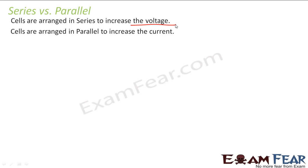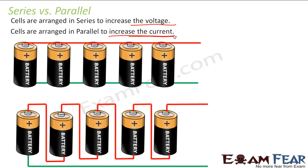Whereas you can arrange cells in parallel to increase the current. As you saw in the previous slide, even though you arrange n number of cells in parallel combination, your voltage will still remain the same — since the voltage across each cell remains the same, there is no increase in voltage. But there is an increase in the current which flows through the circuit when the cells are arranged in parallel. So depending upon your requirement, whether you want to increase the voltage or the current, you arrange cells in series or parallel combination respectively.